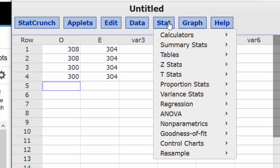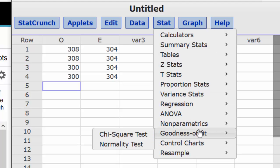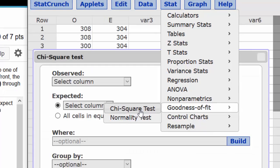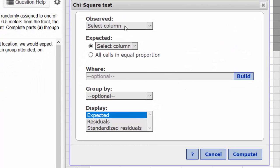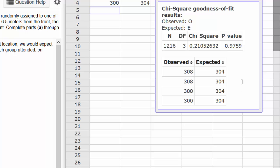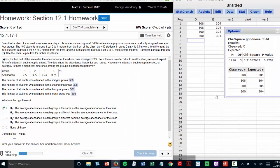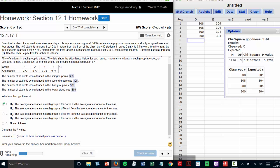Alright, for the p-value: Stat, goodness of fit, chi-square test. The observed are in column O and the expected are in column E, although I could have taken the option of all cells are in equal proportion. Click Compute. And there's my p-value .9759. So let me go back and type that in for the p-value.